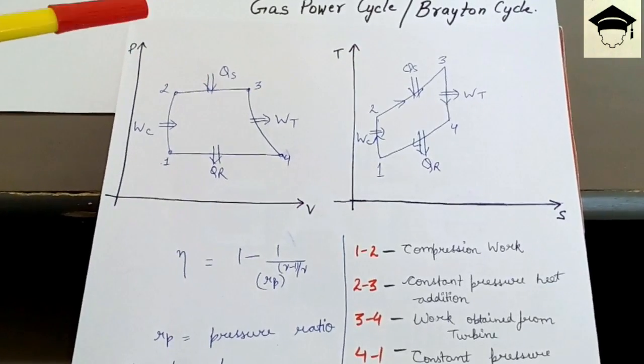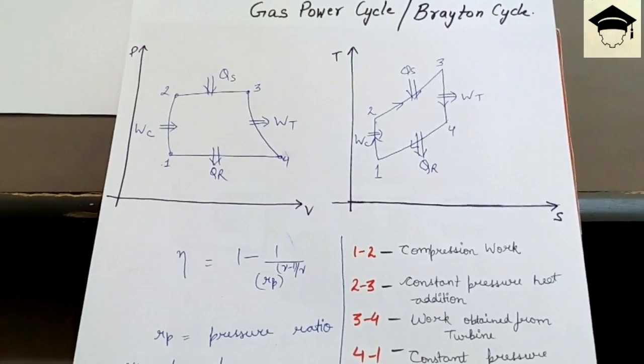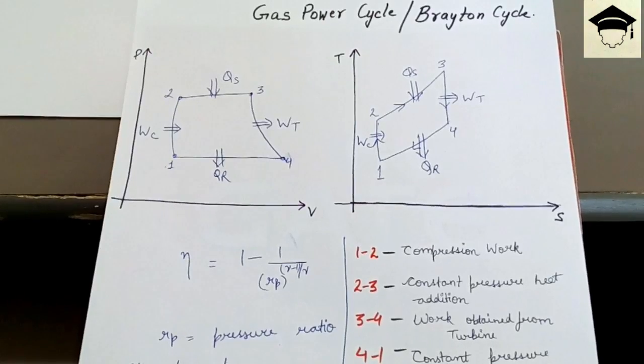So gas power cycle or Brayton cycle. This is a cycle that employs the air, that is the atmospheric air, it uses as a fuel.